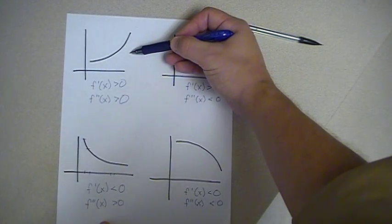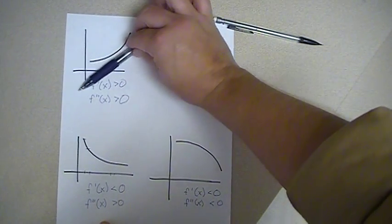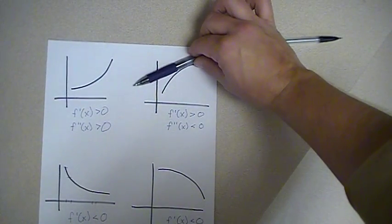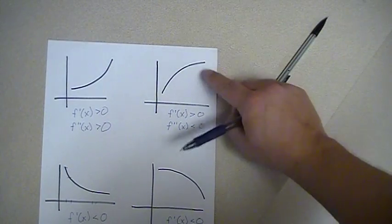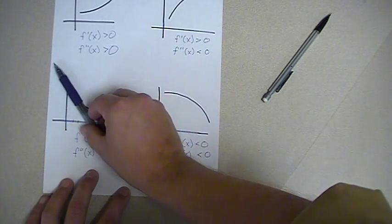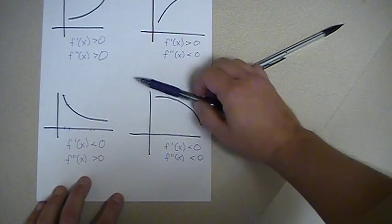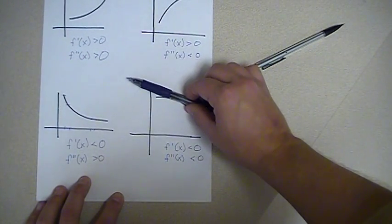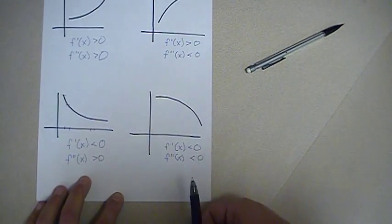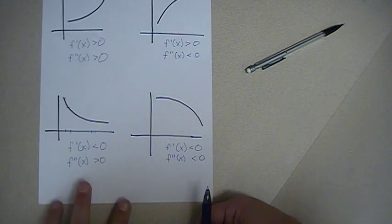So these four graphs all mean something different. The first is increasing at an increasing rate — always positive slopes becoming more and more positive. The second is increasing but at a decreasing rate — still increasing but starting to level off. The third is decreasing at an increasing rate — dropping off a lot at first, then not as much. The fourth is decreasing at a decreasing rate — starting with a small decrease that becomes larger and larger.